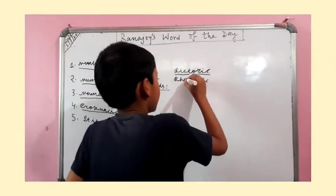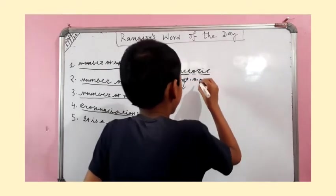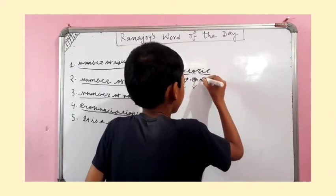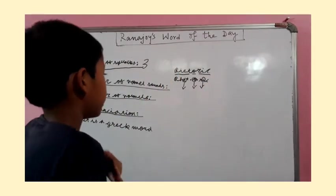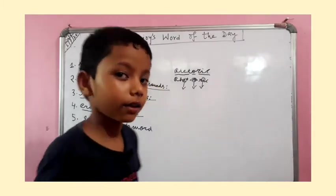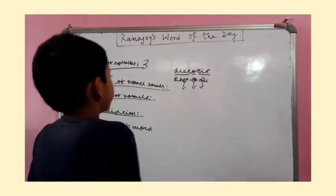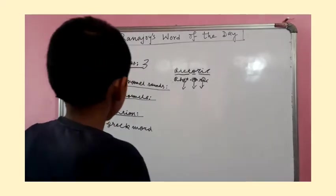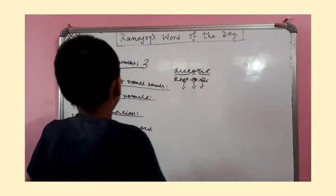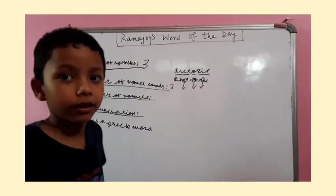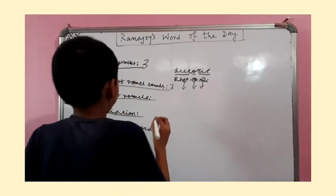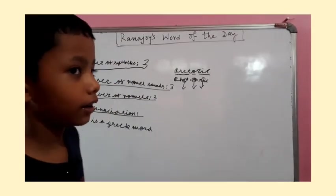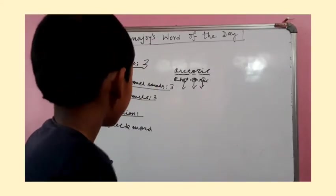Three syllables and also three vowel sounds. The vowels are here — one, two, and there's the last one, three. So, there are three vowels, right? Yes. And there are three vowel sounds. The number of vowels are also three. There are three vowel sounds in Rhetoric and three vowels in Rhetoric.